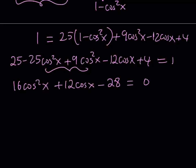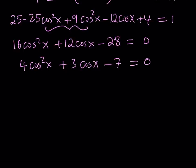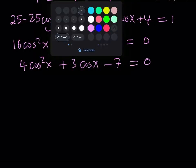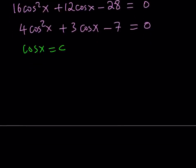We can divide everything by 4 to make it easier. This becomes 4 cosine squared x plus 3 cosine x minus 7 equals 0. Since the sum of the coefficients is 0, which means 1 is a solution, we can use substitution to turn this into a polynomial. Let's call cosine x equal to c. So we have 4c squared plus 3c minus 7 equals 0, and c equals 1 is a solution.